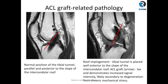On the second image you can see the Blumensaat line indicated by the red line, and the tibial tunnel is anterior to it — which is not where it should be. This predisposes the graft to abnormal biomechanical stress, causing graft impingement, degeneration, and abnormal stress which can lead to graft failure or tear.